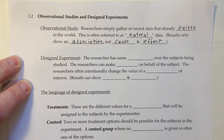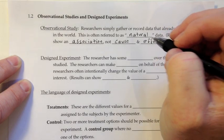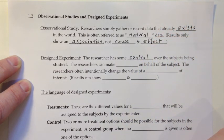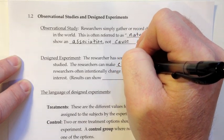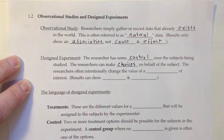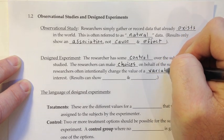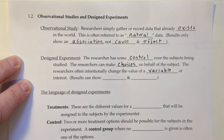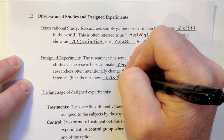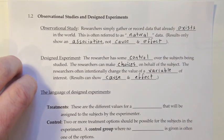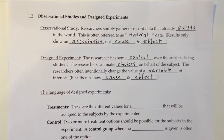Another option is a designed experiment. Here the researcher has some control over the subjects being studied. The researcher can make choices on behalf of the subject, and researchers often intentionally change the value of a variable of interest. Results can show cause and effect in this type of study. For example, perhaps you're doing a study on whether a certain medical treatment can help a bald person grow back hair.